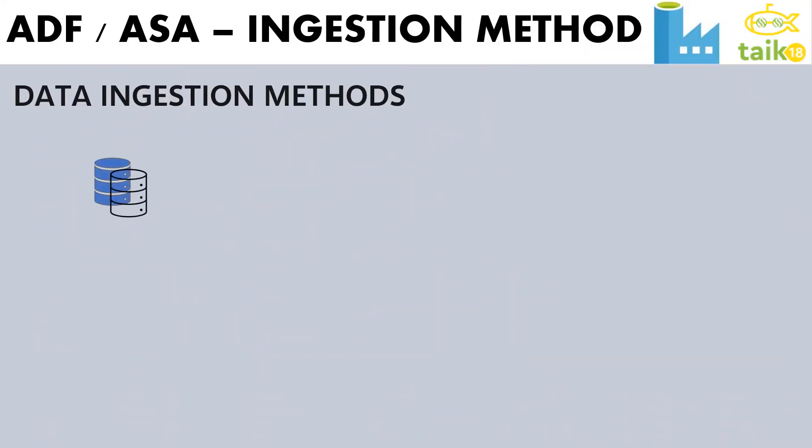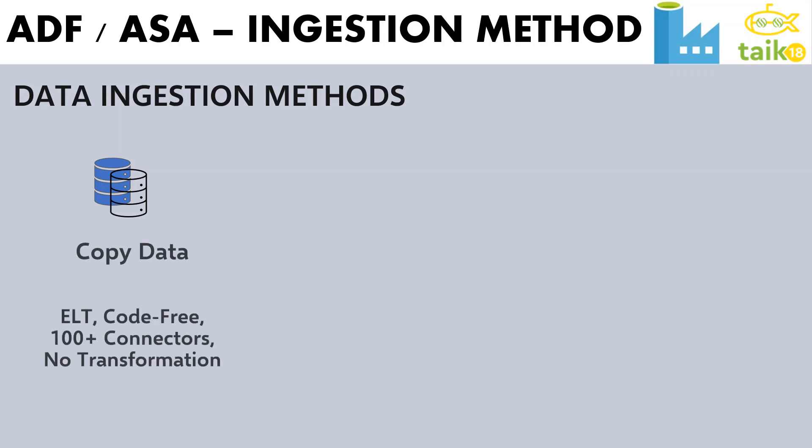In Azure Data Factory and Azure Synapse Pipelines, there are three methods of data ingestion. The first is Copy Data. In Copy Data, you can do the ELT process — extract, load, and transform — with a code-free approach. There are almost no transformations available here; you can just extract, load, and then do the transformation in the graphical interface itself, with 100-plus connectors to connect to different data sources.